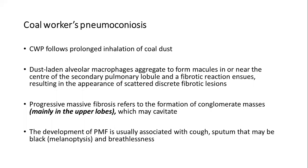Patients who develop structural lung disease from coal exposure are known to have coal workers' pneumoconiosis. In this condition, dust-laden alveolar macrophages aggregate to form macules near the center of the secondary pulmonary lobule, and a fibrotic reaction ensues, resulting in scattered discrete fibrotic lesions. Importantly for MCQs: in coal workers' pneumoconiosis, the most affected part of the lung is the upper lobes, where progressive massive fibrosis — the formation of conglomerate masses — occurs. Development of progressive massive fibrosis is associated with cough, black sputum (melanoptysis), and breathlessness.